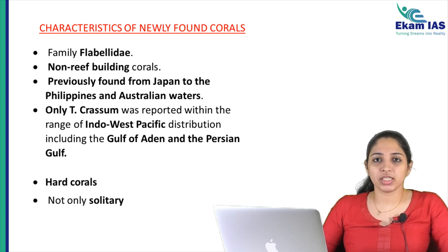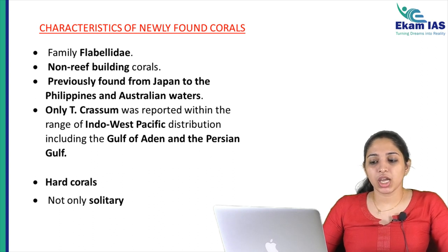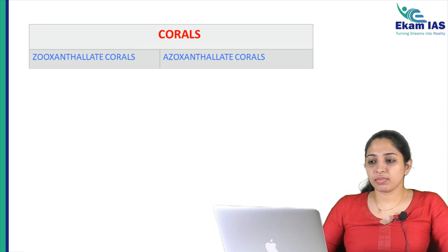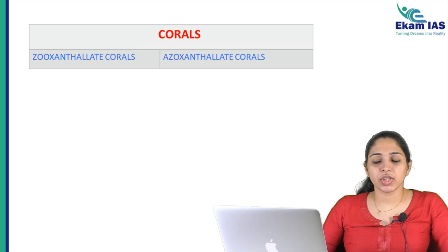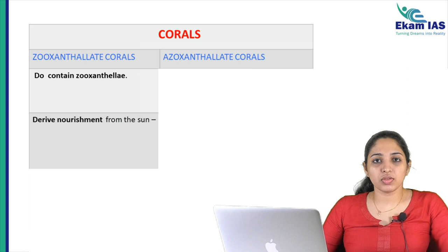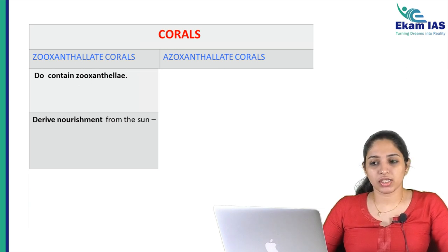These are hard corals, meaning they are made up of calcium carbonate structures, and they live solitary. Corals can be divided into Zooxanthellate corals and Azooxanthellate corals. Zooxanthellate corals contain Zooxanthellae, which is a tiny algae. The corals depend on the Zooxanthellae for food, as Zooxanthellae prepare food through photosynthesis.